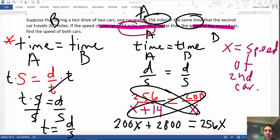Last but not least, solve for X, subtract 200X, and I'll have 2800 equals 56X.